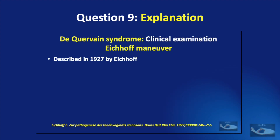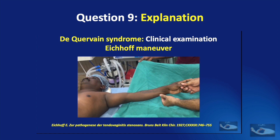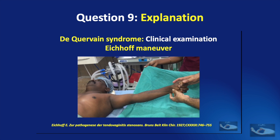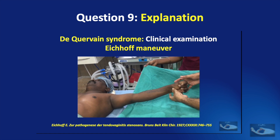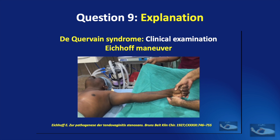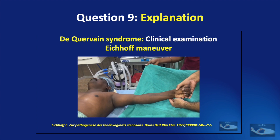The Eichoff test was described in 1927 and is a provocative test like the Finkelstein maneuver, but we need to be careful performing it as it may cause extreme pain. The Finkelstein test consists of holding the thumb and ulnar-deviating the wrist. In the Eichoff maneuver, the patient is asked to adduct the thumb, place it on the palm, and close the fist using all other fingers. The examiner then holds the entire fist and ulnar-deviates the wrist; severe pain at the wrist indicates a positive response.